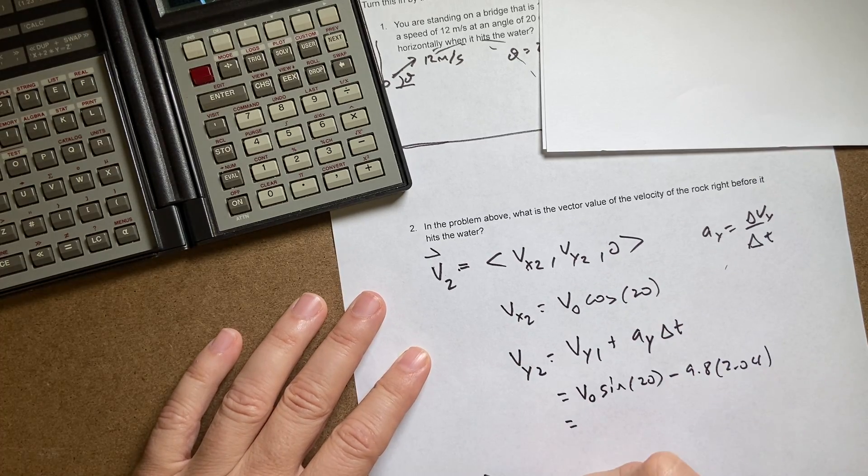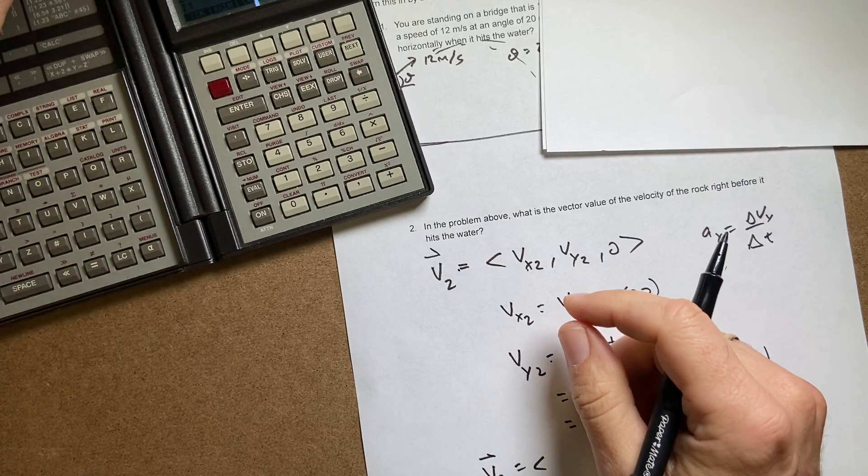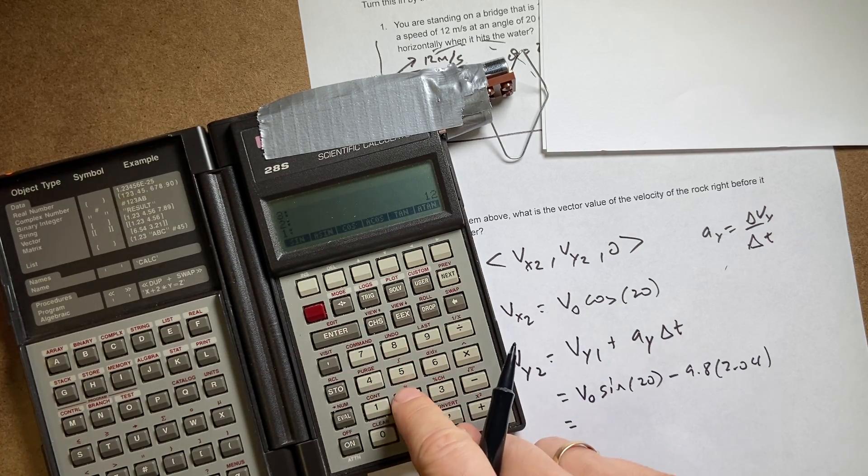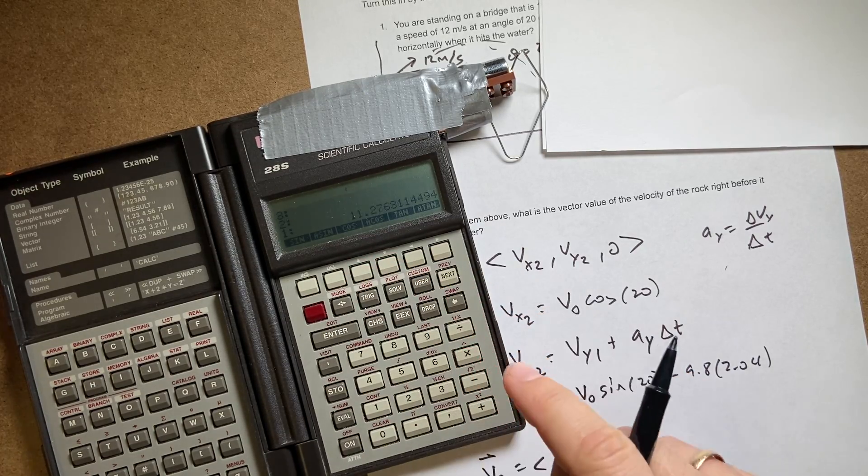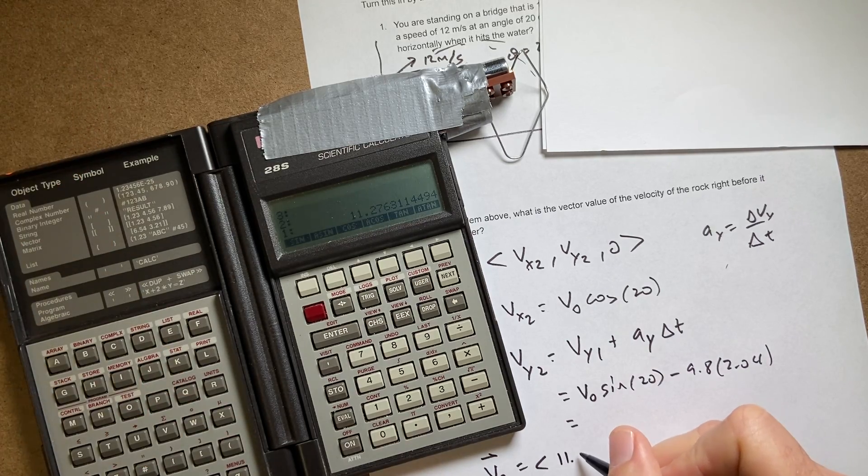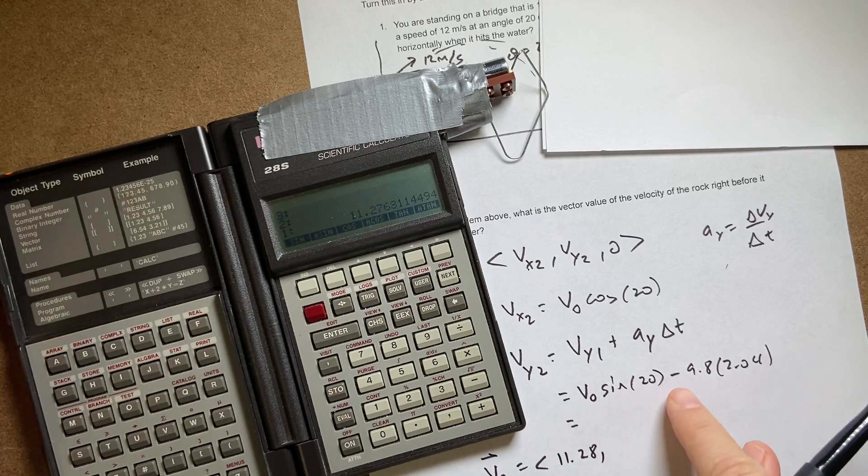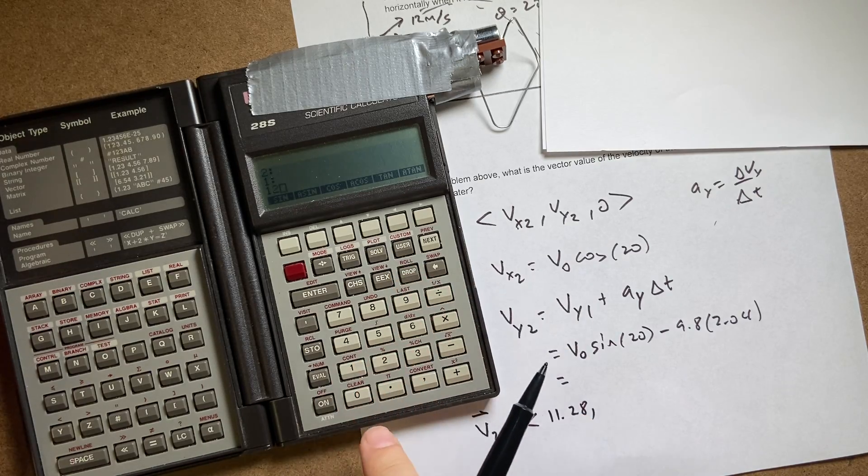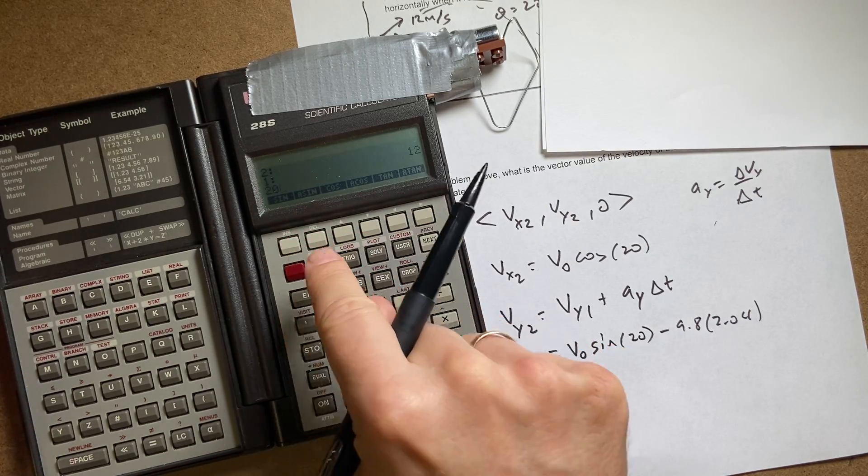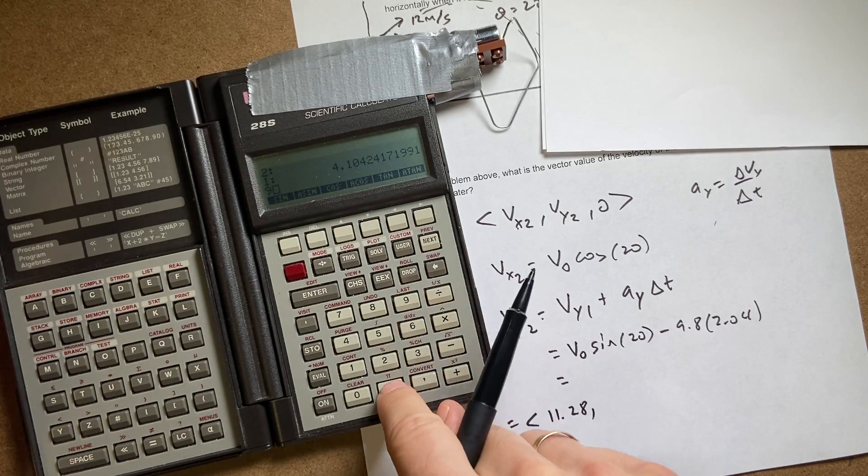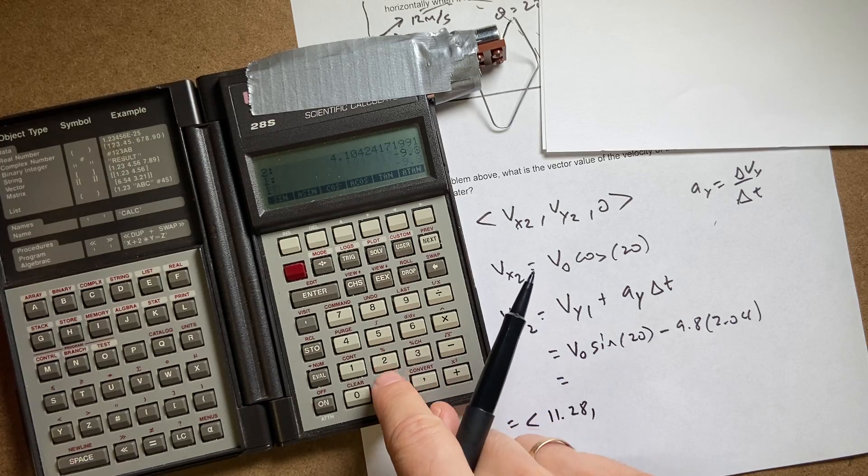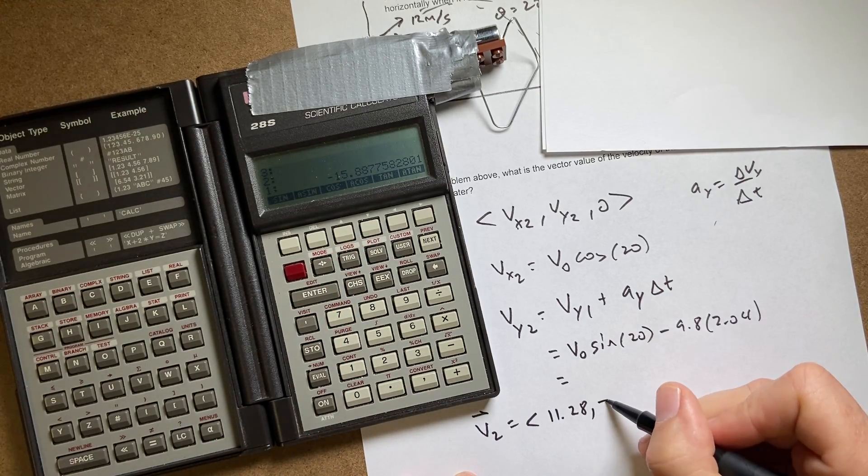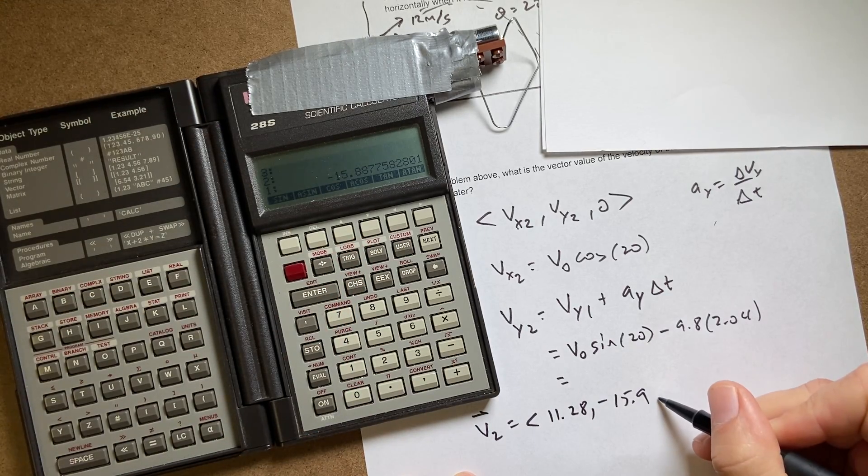This is going to be V0 sine of 20 minus 9.8 times t which was 2.04. Let's first do the x component. 12 enter 20 cosine times. So that's my x component, 11.28. Now the y component. It's going to be 12 enter 20 sine times. That's that part. And then I have 9.8 negative enter 2.04 times. And then I'm going to add those. And I get a negative y velocity which makes sense. It's moving in the negative y direction. Negative 15.9 and then zero.